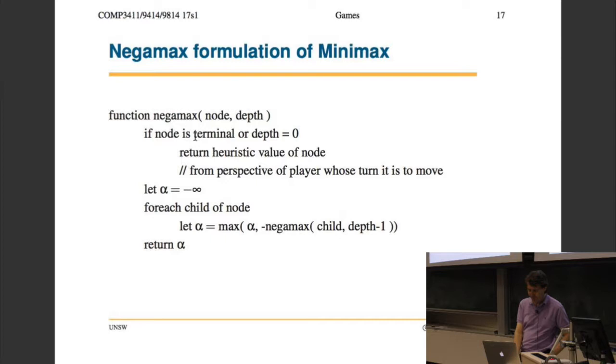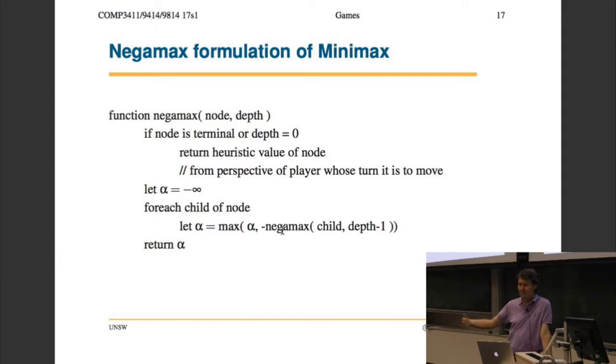So if the node is terminal or the depth is zero, we return the heuristic value of the node from the perspective of the player whose turn it is to move. What we do is we always maximize. We don't alternate maximizing and minimizing. We always maximize because we're always evaluating the board from our own perspective. But when we do the recursive call, when the answer comes back, we put a minus sign. Because this recursive call evaluates the board from the perspective of the other player. So if it comes back with a value of 3.7, then from our point of view, it's minus 3.7, right? So anything good for them is bad for us. So by putting this minus sign in, it just simplifies the code a lot. We don't have this kind of repeated structure.